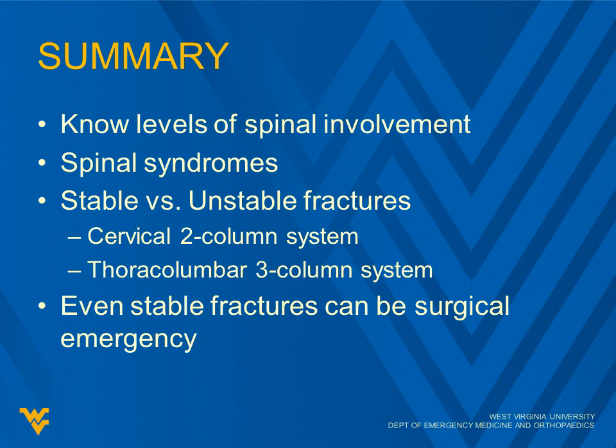Spinal syndromes are important and appear on every board exam. Review central cord, anterior cord, Brown-Séquard, and cauda equina syndromes. Remember for cervical spine we use a two-column system, and for thoracolumbar a three-column system. If both cervical columns are disrupted, that's unstable; if two of the three thoracolumbar columns are disrupted, that's an unstable fracture. Even stable fractures can be a surgical emergency — if the patient is having neurological symptoms, they need urgent orthopedic or neurosurgical consultation.